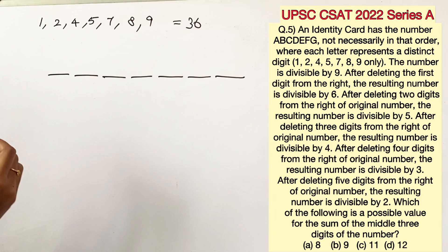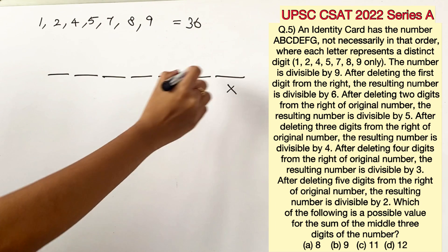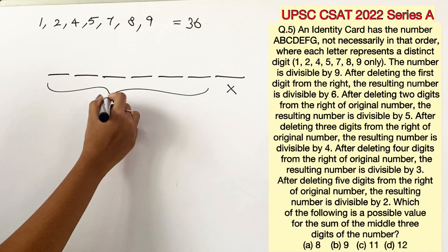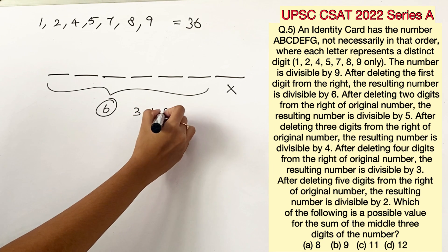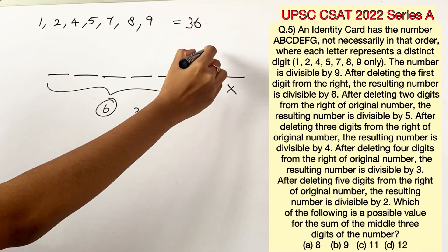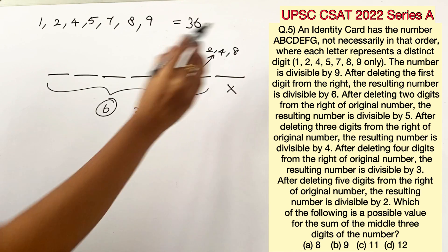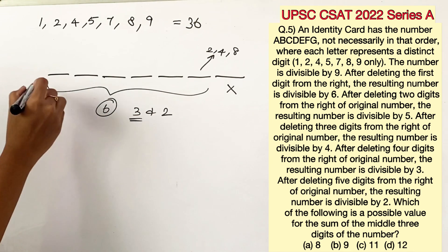The second statement says after deleting the first digit from the right the resulting number is divisible by 6. Now we know that the divisibility rule of 6 is for the number to be divisible by both 3 and 2. We know that for a number to be divisible by 2 it has to end in an even number and the only even numbers given are 2, 4 and 8.